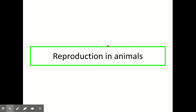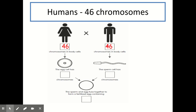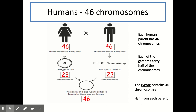Now we're going to focus on reproduction in animals. One example is humans. In each of their normal body cells, they have a diploid chromosome complement — meaning their normal body cells have 46 chromosomes inside their nucleus, made up of two matching sets. Females produce gametes in the form of egg cells, and males produce gametes in the form of sperm cells. These gametes are haploid, as they have a single set of chromosomes inside their nucleus.